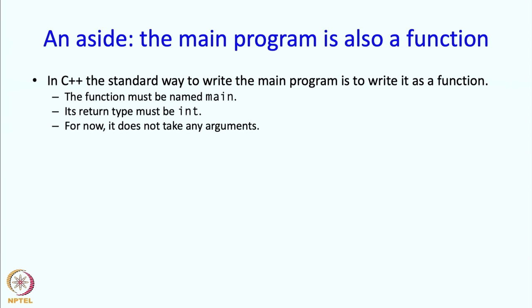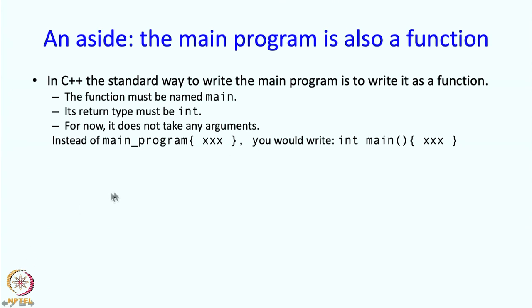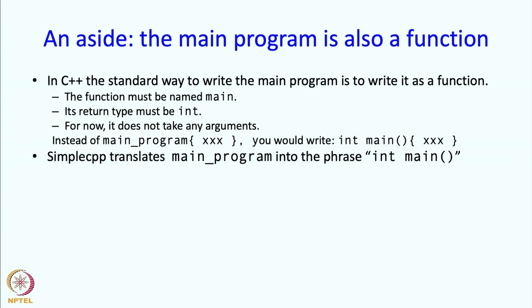For now, the main program is not going to take any arguments. So in C++ you should be writing 'int main()' with no arguments and the body containing whatever statements. SimpleCPP is doing a translation for you — when you write 'main program', SimpleCPP translates this into that text. There is a feature called preprocessor macros being used here; you don't need to understand them for this course, but they are discussed in the book.